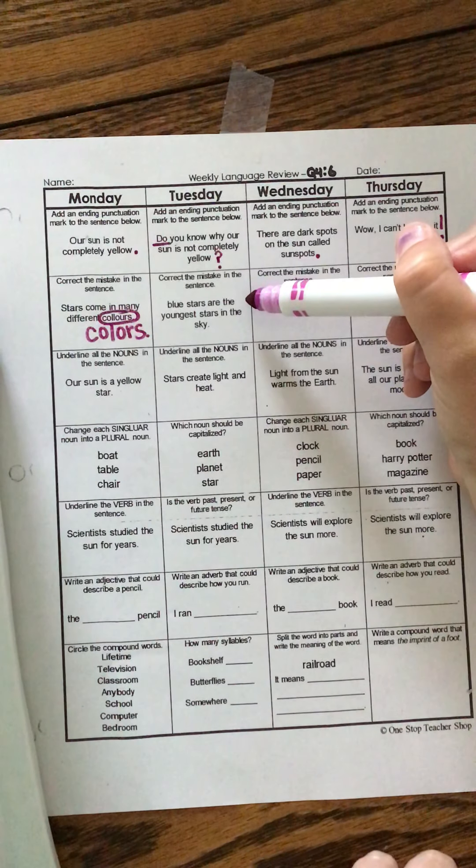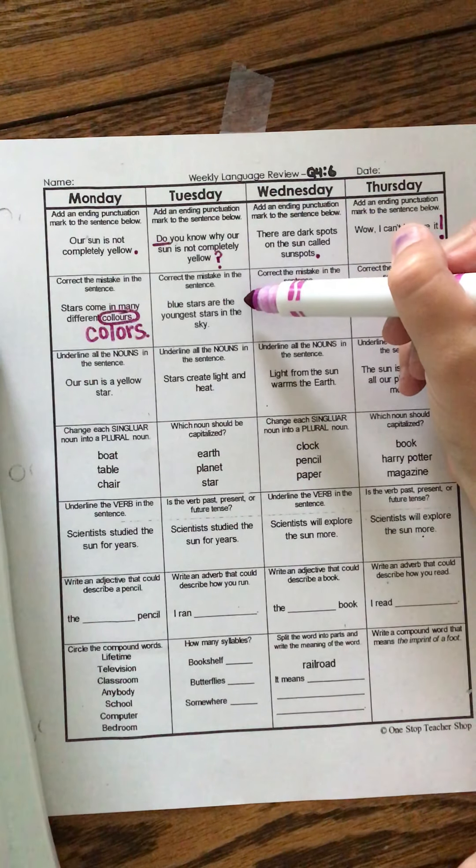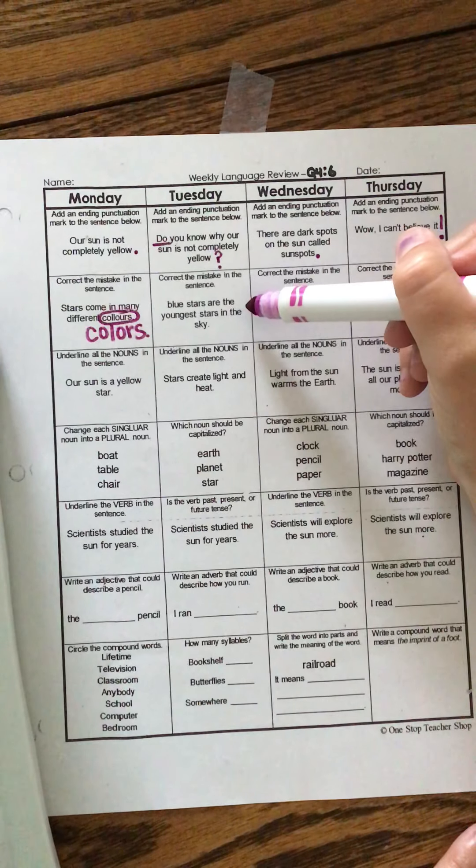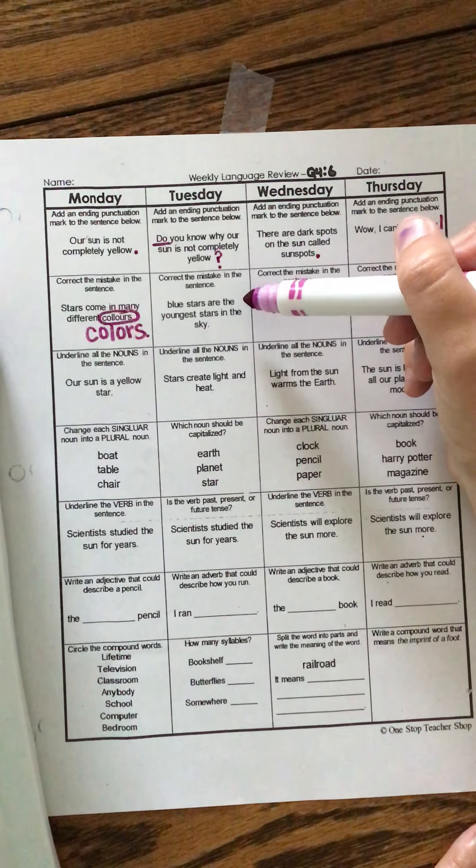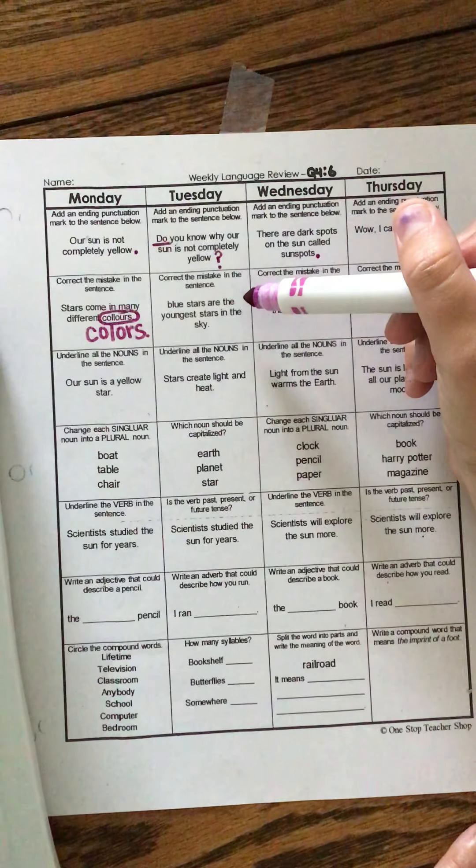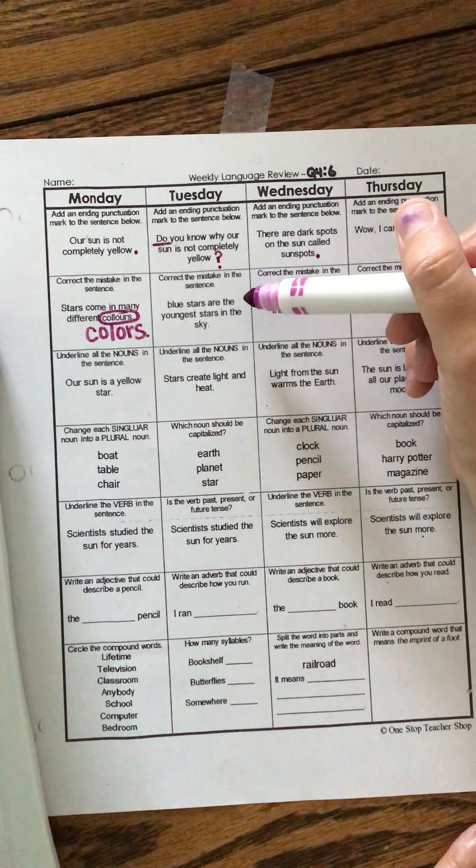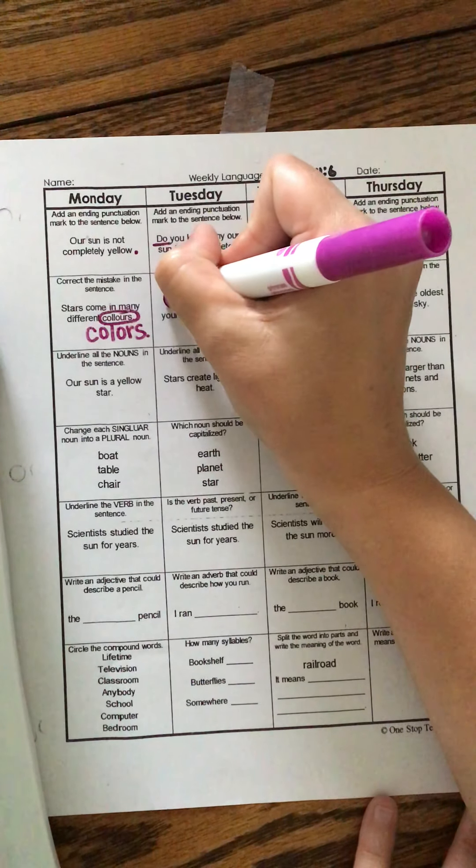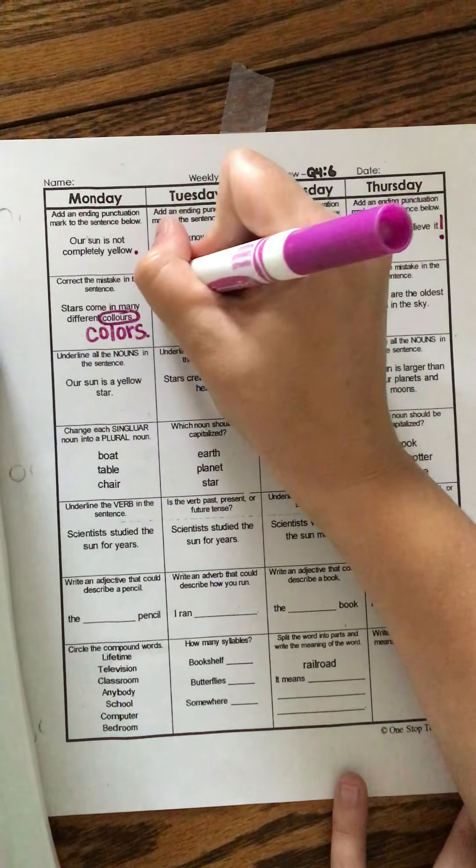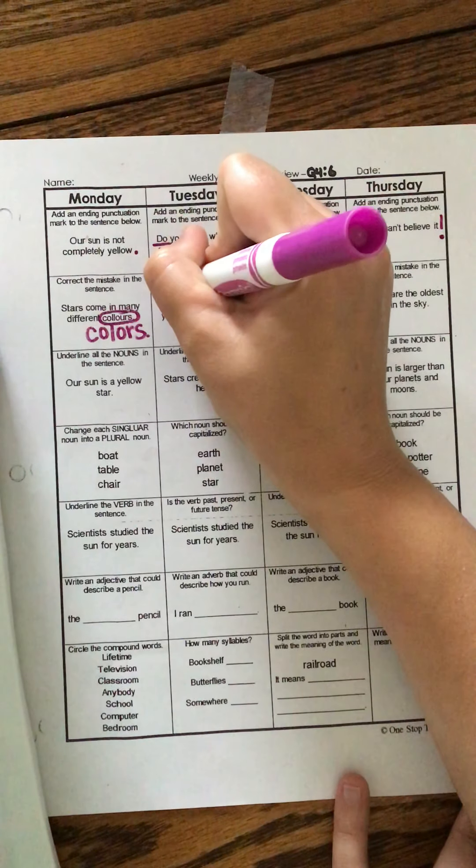Correct the mistake in the sentence. Blue stars are the youngest stars in the sky. Well, all the words are spelled right. Hmm. Oh, no. It didn't start with a capital letter. Alright, so we need to fix that.